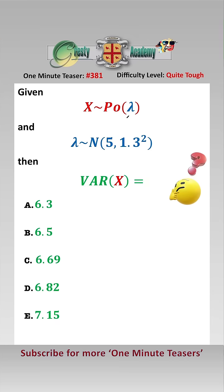Here we have the parameter of a random variable X is itself a random variable, so we're going to use the law of total variance.